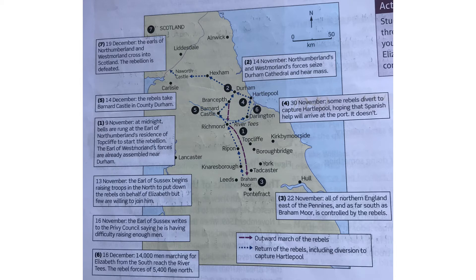Number one: on the 9th of November at midnight, the bells are rung at the Earl of Northumberland's residence at Topcliffe to start the rebellion. The Earl of Westmoreland's forces are assembled near Durham. On the 13th, the Earl of Sussex begins a response to raise troops to go north, but few people are willing to join him. As a result, on the 16th he writes to the Privy Council to get help raising enough troops.